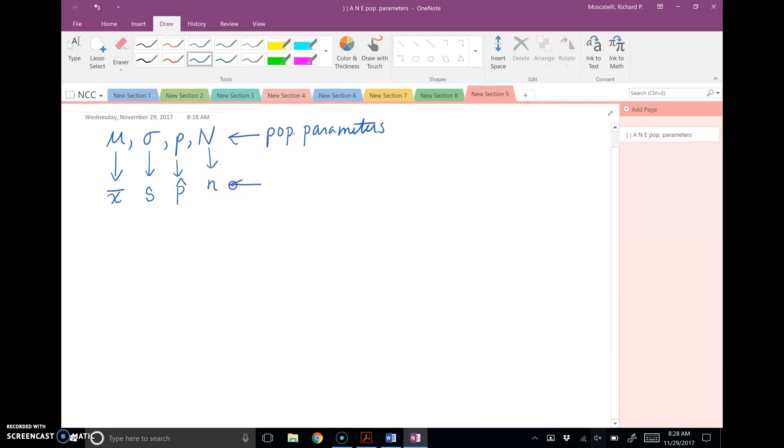Now, these things are called statistics. All right, so we use these statistics to pass judgment on population parameters.